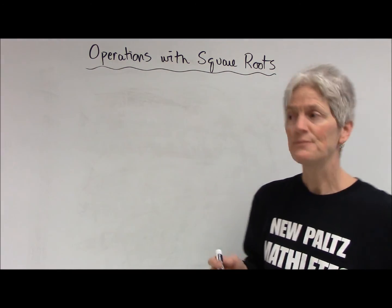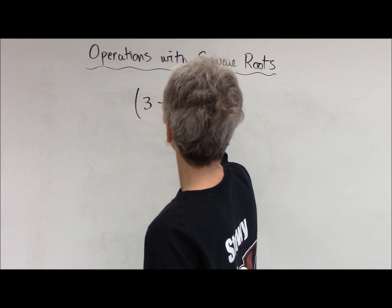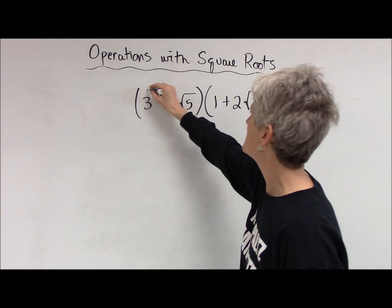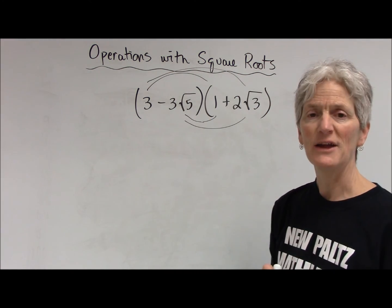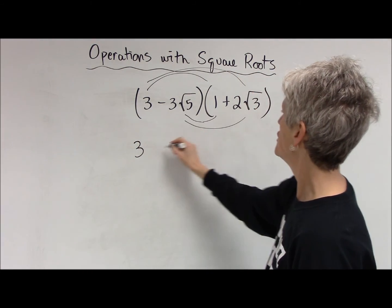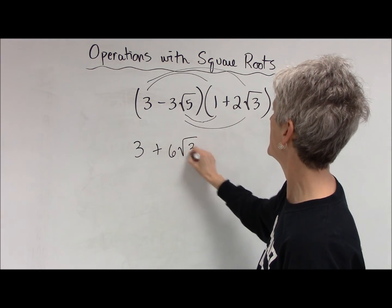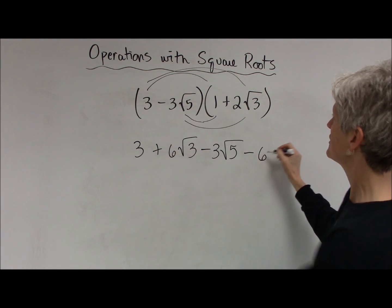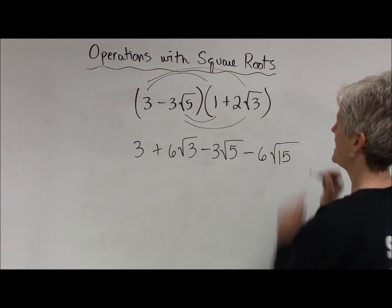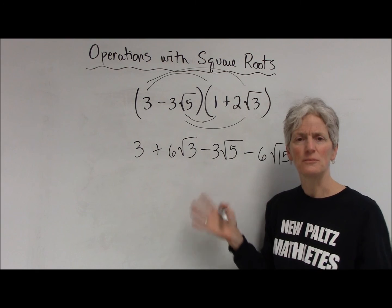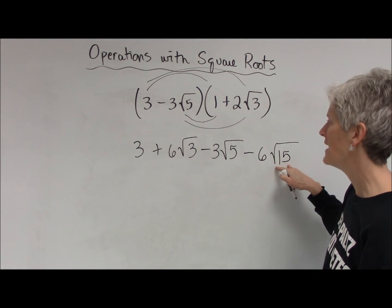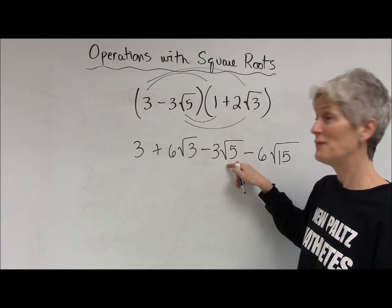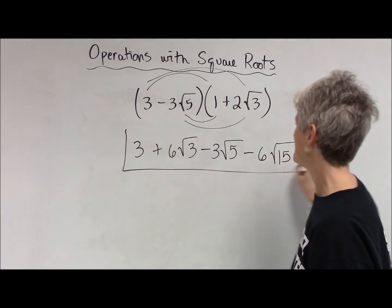You might have something a little more complicated — a binomial with square roots. I would just do my double distribution, as I always do when I have a binomial times a binomial. That gives me 3, then 3 times 2 is 6 square root of 3, then negative 3 root 5 times 1 is negative 3 square root of 5, then negative 6 square root of 15. Those radicals are not like, so you can't combine them. There's no perfect square factor of 3, 5, or 15, so you'd be done.